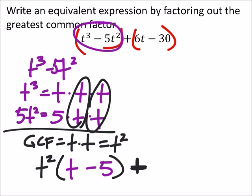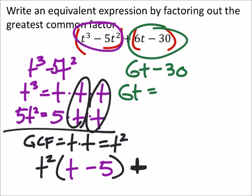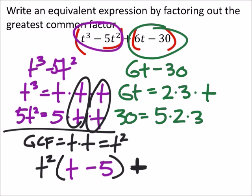Well, we're going to add this to the other side, which I guess I will do in green. Well I've got a 6t minus 30. So I've got a 6t, which factors out into 2 times 3 times t. And then 30 would be 5 times 2 times 3.